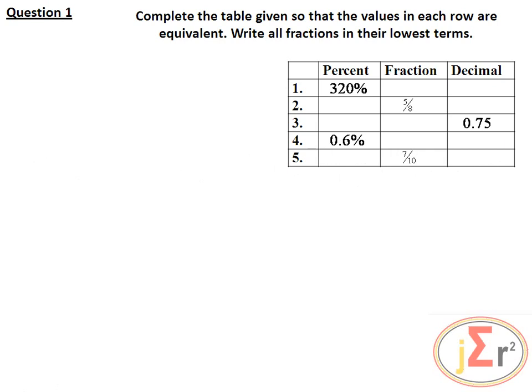Question 1: Complete the table given so that the values in each row are equivalent. Write all fractions in their lowest terms. We are required to complete the table, which has the headings: percent (%), fraction, and decimal. When a number is given as a percentage, we need to convert it to a fraction and also to a decimal fraction.